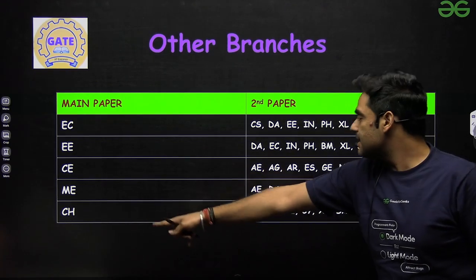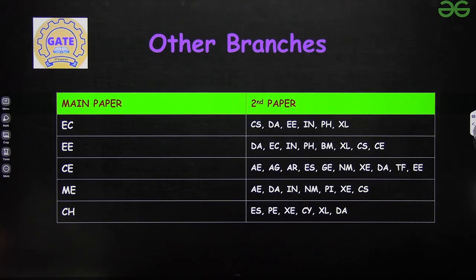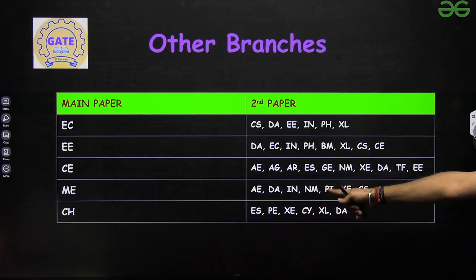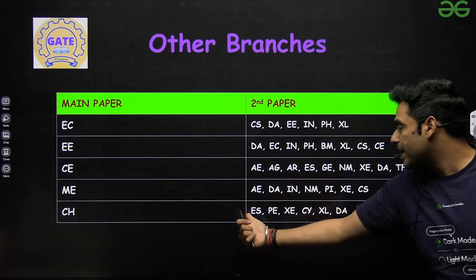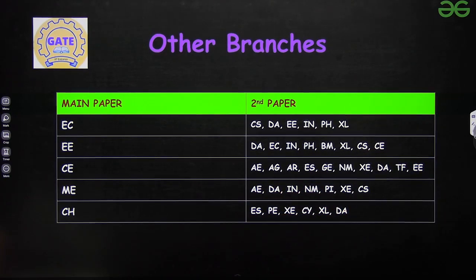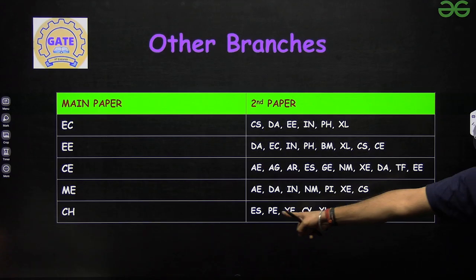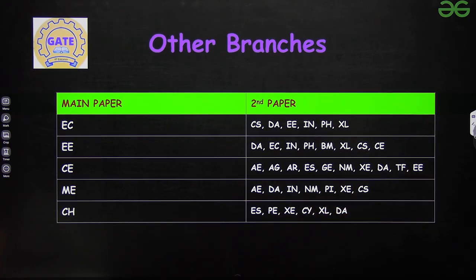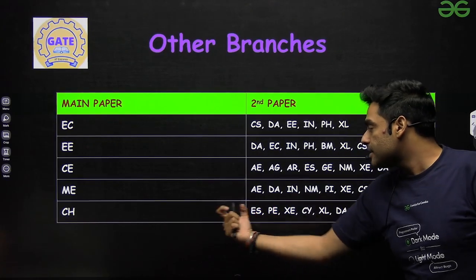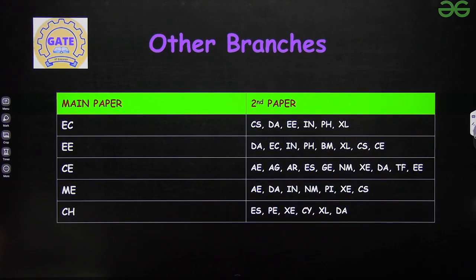With Mechanical as the main subject, you can take: AE (Aeronautical Engineering), DA, Instrumentation, Naval, PI (Production Engineering), XE, and CS. With Chemical Engineering as the main paper, you can take: ES (Environmental Science), Petroleum Engineering, XE, CY (Chemistry) — which also has major syllabus overlap with Chemical Engineering — XL (Life Science), and DA.